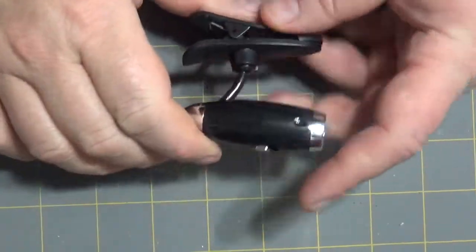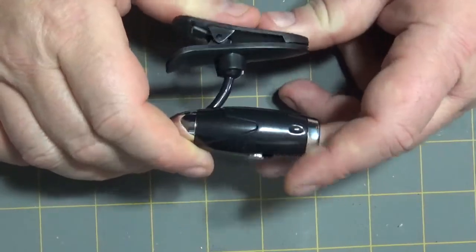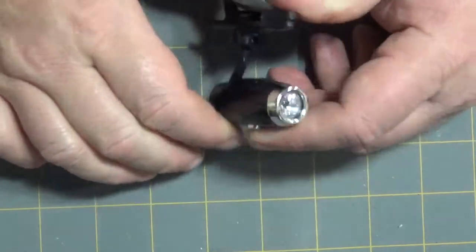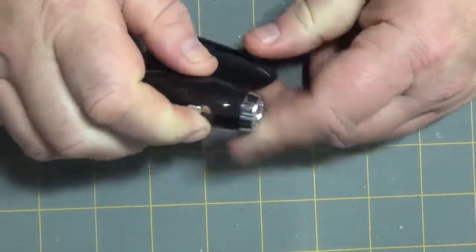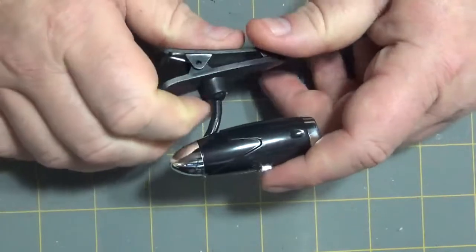Okay guys, this is just a quick 'what I found this week' at the dollar store. I found these little book lights. A buck, they're at Dollar Tree.